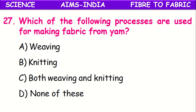Which of the following processes are used for making fabric from yarn? From yarn, fabric is made by two processes. The process in which a single yarn is made into fabric is called knitting. The process in which two or more yarns are made into fabric is called weaving. So both weaving and knitting are the correct answer.